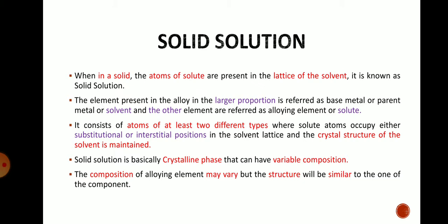In this definition there are two important words: solute and solvent. In the crystal lattice structure of the solvent, one element in an alloy is the solute and another is the solvent. If the atoms of solute are present in the crystal lattice structure of that solvent, that phase of the alloy is called a solid solution phase.